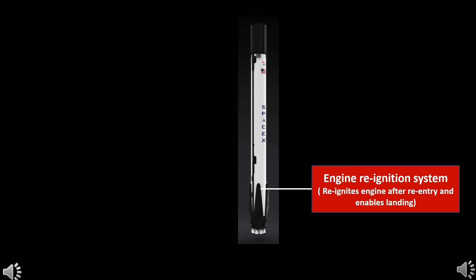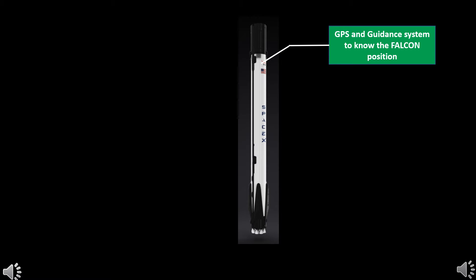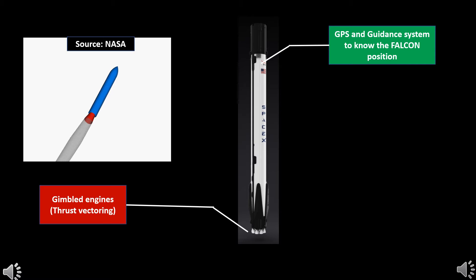The Falcon has the high precision GPS system to know its position from the platform. The guidance or positioning system tells the processor the orientation of the Falcon body and the roll angle. On the output we have the gimballed engines which can be moved to control the direction of the thrust, which is called thrust vectoring.